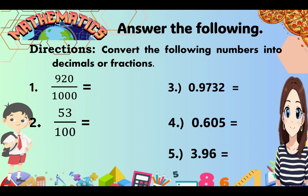Now it's your turn. Convert the following numbers into either decimals or fractions. Number 1: 920 over 1,000 equals blank. Number 2: Convert 53 over 100 to decimal. Number 3: Convert 0.9732 to a fraction. Number 4: Convert 0.605 to a fraction. Number 5: Convert 3 and 96 hundredths to a fraction.